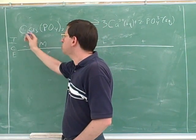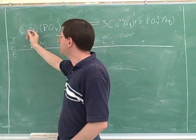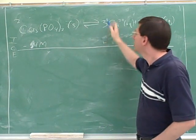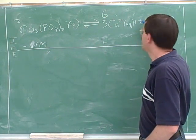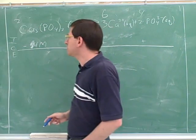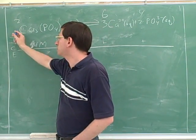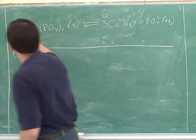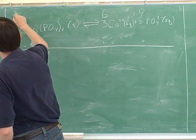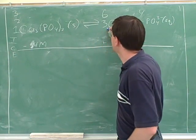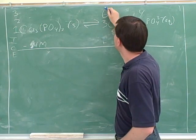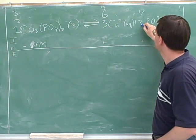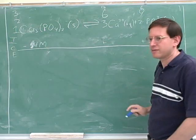Suppose that I used up two moles of this. If I used up two moles of this, how many moles of this do you think I would make? Six. And how many moles of this? Four. That's what these coefficients mean — every time we use one of these, we make three of these and two of these. So if I used up three of these, how many moles of this would I make? Nine — three times as much. And how many moles of this? Six.